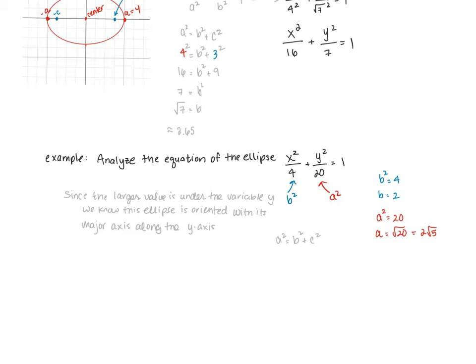Now we can use our relationship between a, b, and c to calculate c. Since a squared is 20 and b squared is 4, we can solve for c to see that c is 4. Plotting all of this information gives us this ellipse.